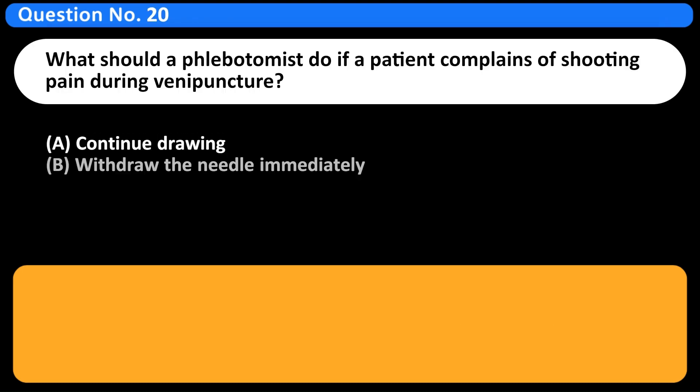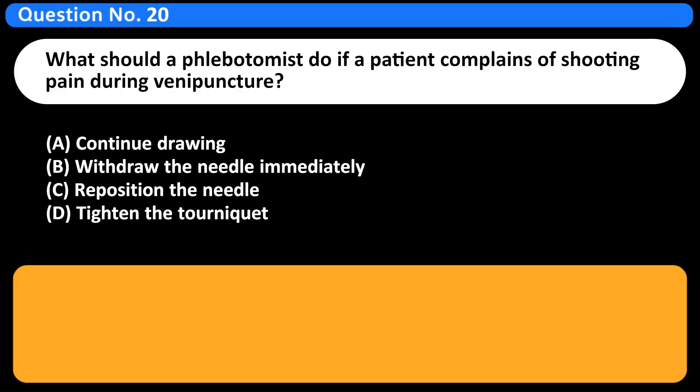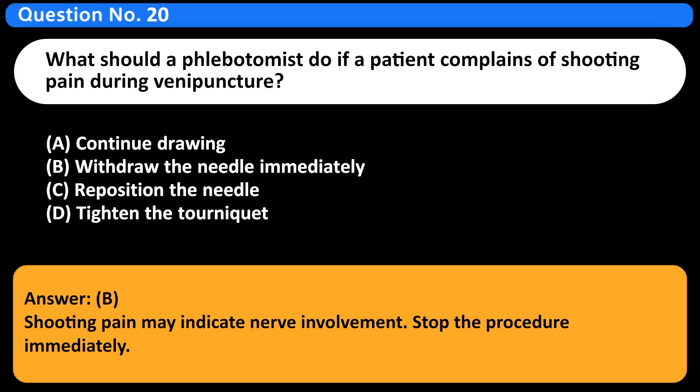What should a phlebotomist do if a patient complains of shooting pain during venipuncture? A. Continue drawing. B. Withdraw the needle immediately. C. Reposition the needle. D. Tighten the tourniquet. Answer B. Shooting pain may indicate nerve involvement. Stop the procedure immediately.